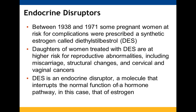Endocrine disruptors can interfere with hormone pathways. Women having complications with pregnancy were once prescribed a synthetic estrogen called DES. Women treated with DES who had daughters were more likely to have daughters with reproductive system issues, including cancers, physical changes, and increased miscarriages. DES is an endocrine disruptor because it disrupted the function of the estrogen hormone pathway.